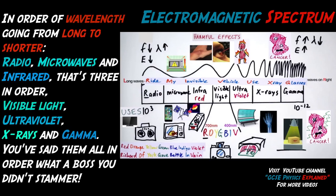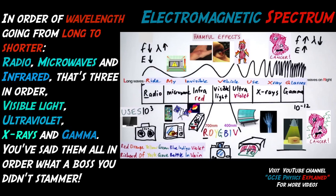Oh, it's Mr. Obi. In order of wavelength, going from long to shorter: radio, microwaves, and infrared, that's three in order. Visible light, ultraviolet, X-rays, and gamma. You've said them all in order, what a boss, you didn't stammer.